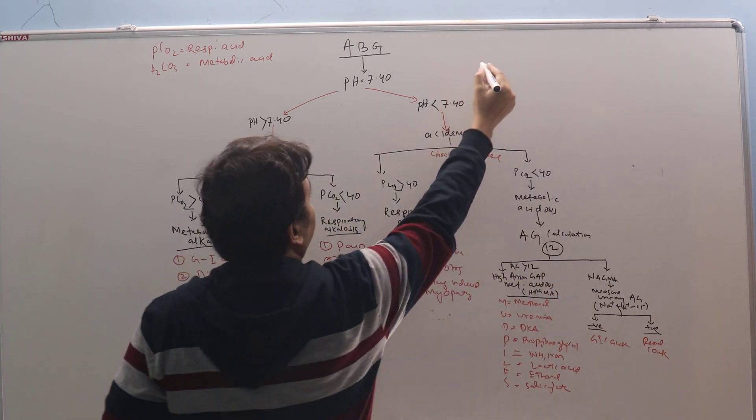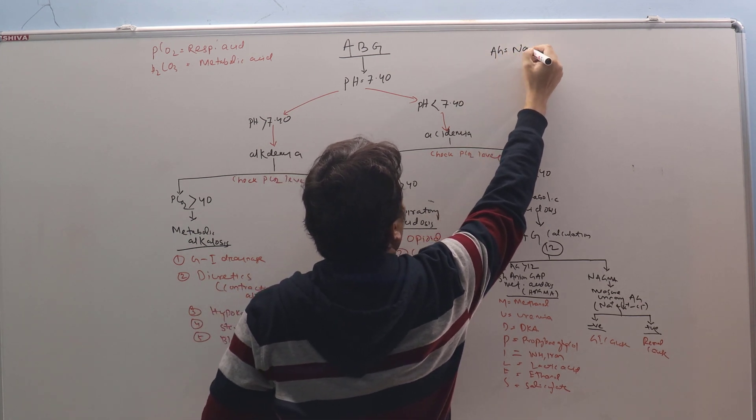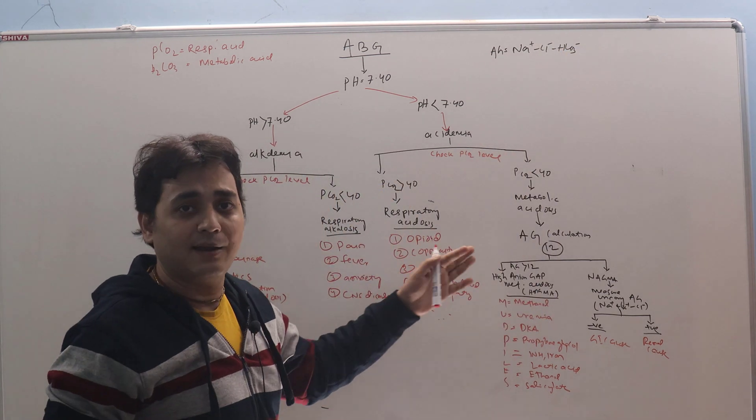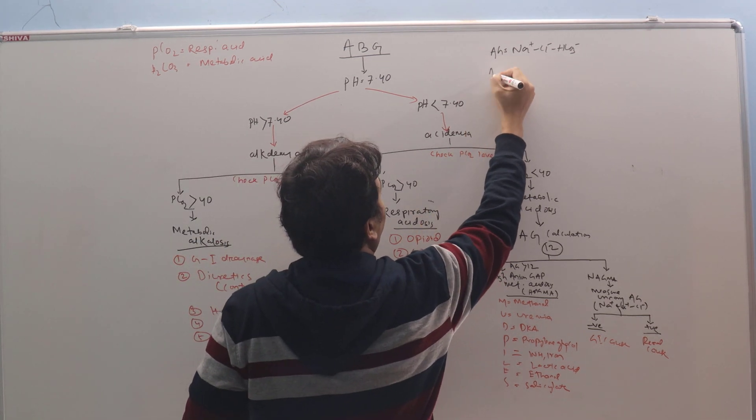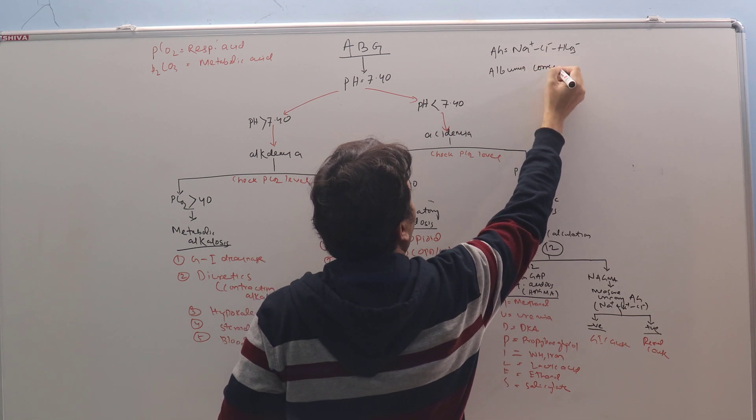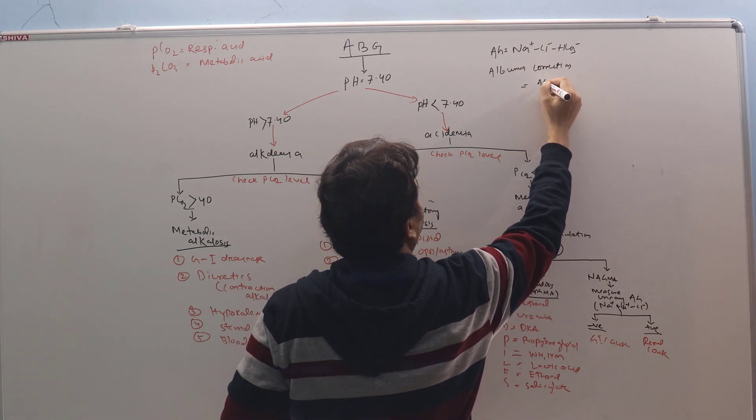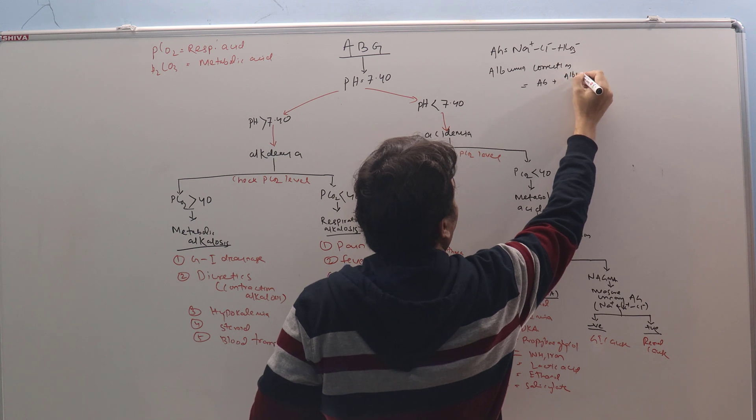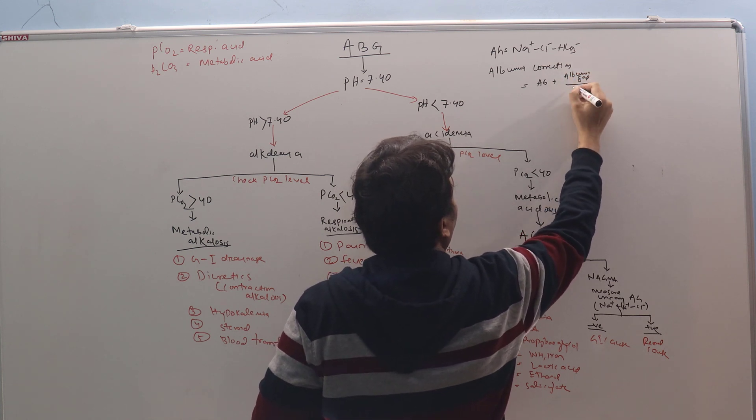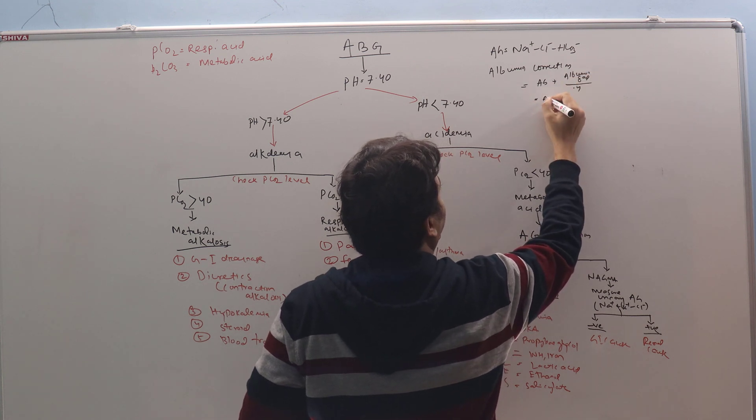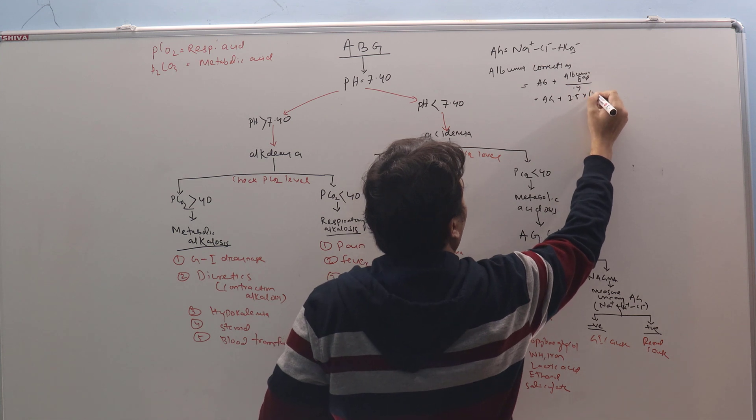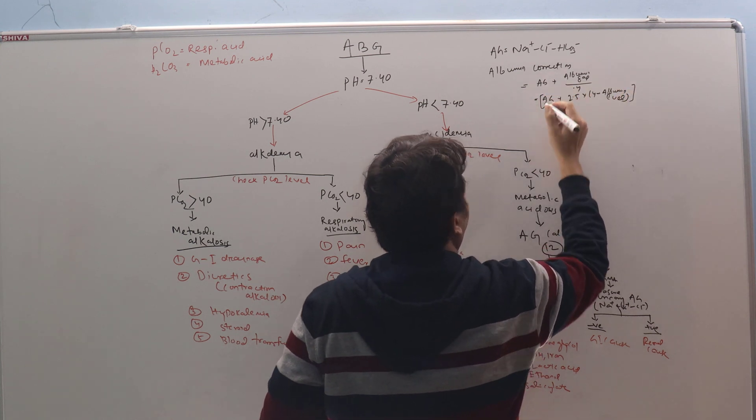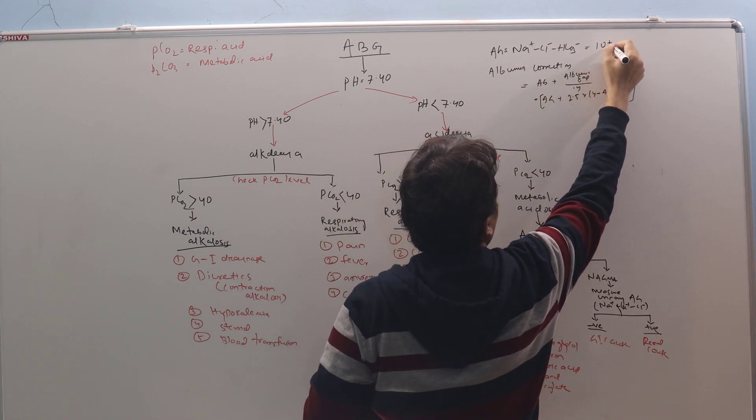Now what is anion gap? Anion gap will be equal to sodium minus chloride minus bicarbonate. And we have to correct it for albumin. What is albumin correction? Albumin correction is equal to anion gap plus albumin gap divided by 0.4, or anion gap plus 2.5 times 4 minus albumin level. Normal albumin will be 10 plus minus 2.